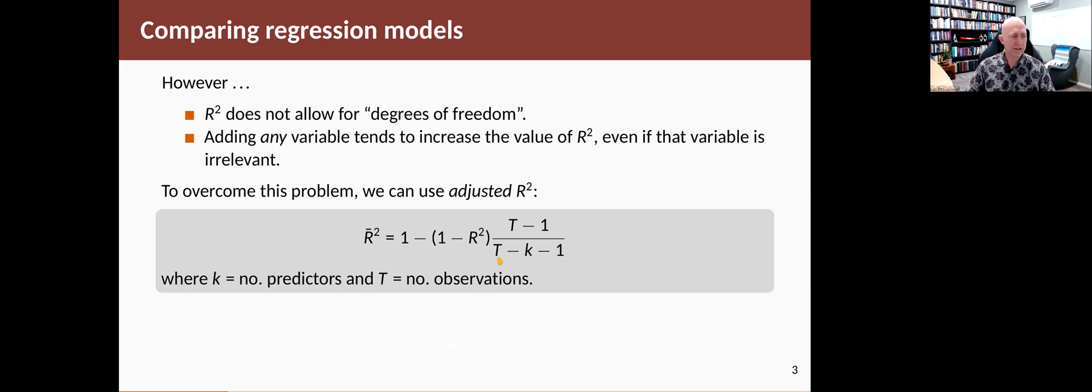Looks a little bit messy, but you can see that this term over here, if you add extra predictors, then the denominator is going to get smaller. So that's going to be larger than one. And then you multiply that by one minus R². And that'll penalize for extra predictors. And then one minus that gives you the adjusted R².